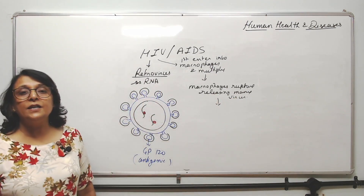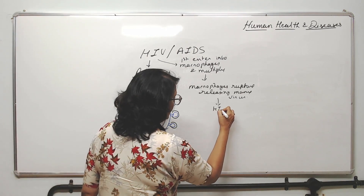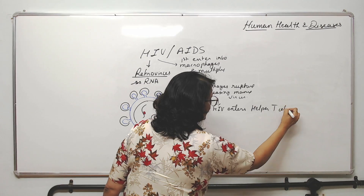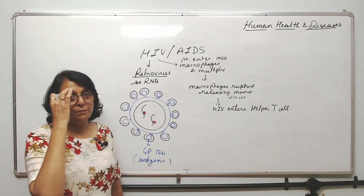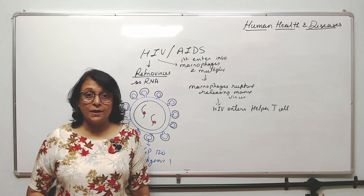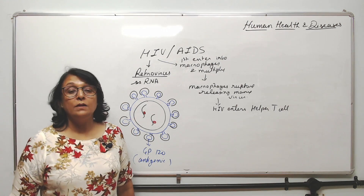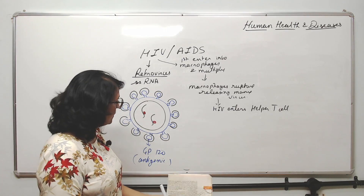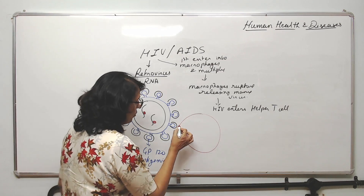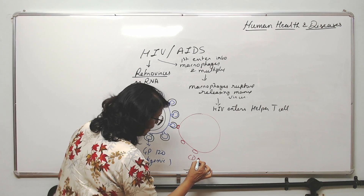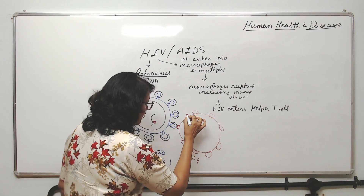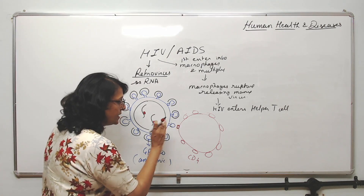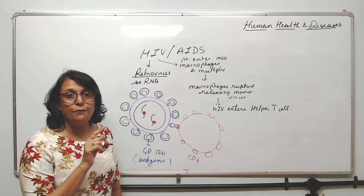After leaving macrophages, the viruses enter helper T cells. T cells are of three types: helper cells, killer cells, and suppressor cells. Helper cells assist B cells in producing antibodies. Helper cells have proteins on their membrane known as CD4. When the virus comes in contact with the helper cell, its mask is removed.